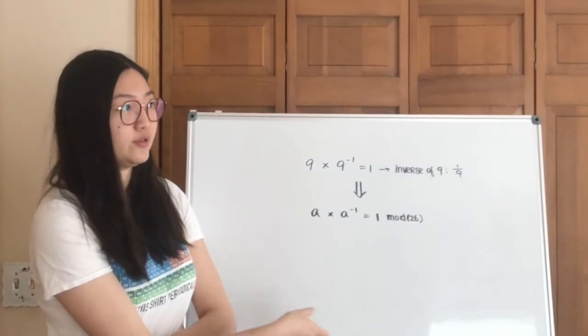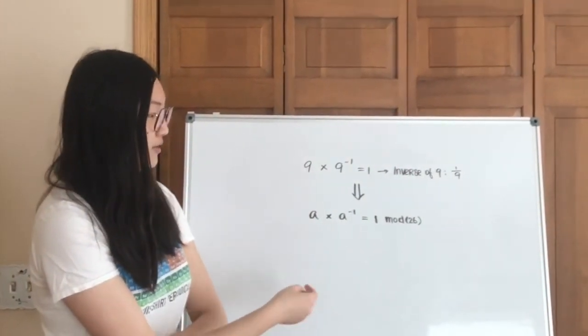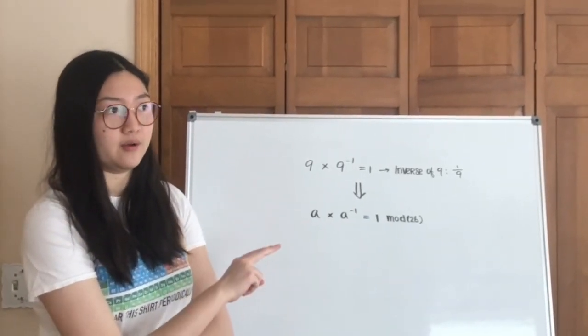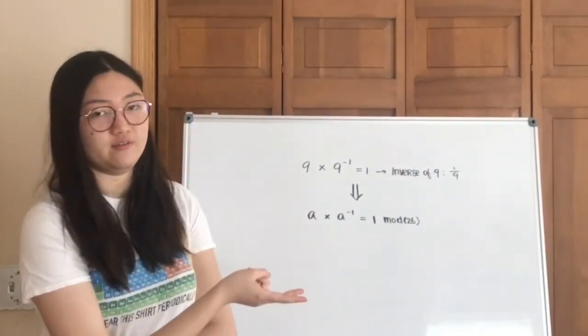In other words, if you have two numbers that multiply together, and when you divide the product by 26, and that gives you a remainder of 1, those two will form a pair of inverses to each other.